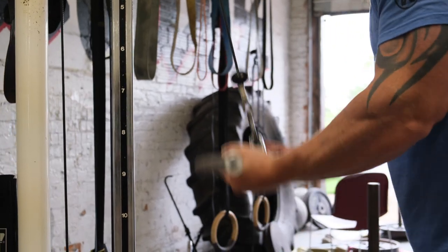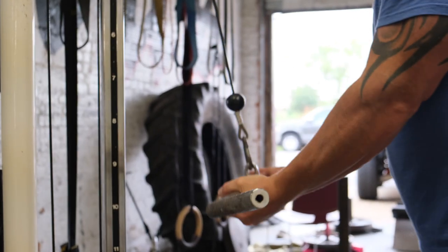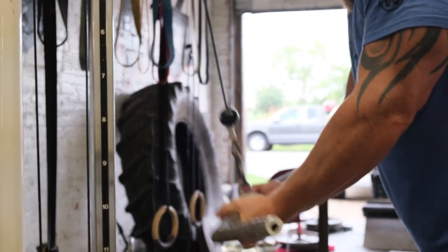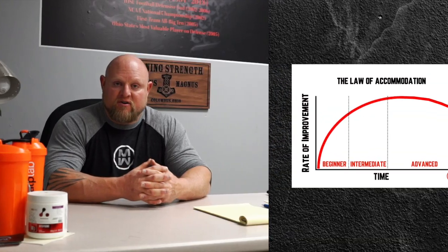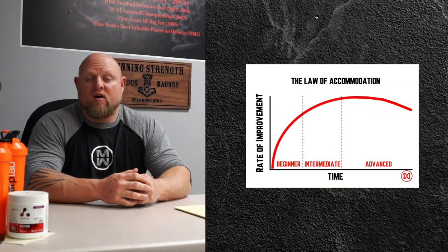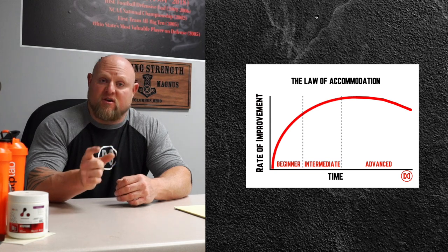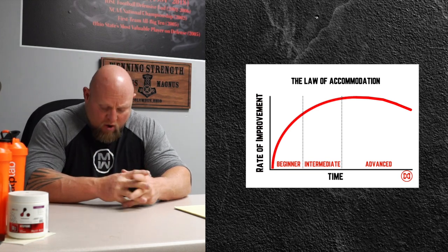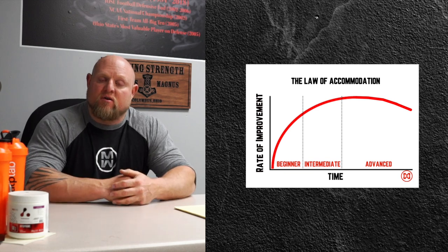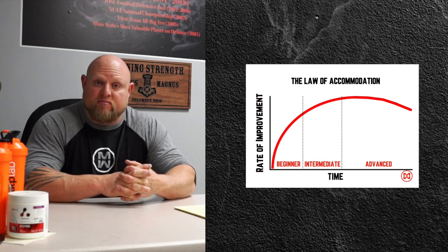At the end of the day, what we really want to see out of our training cycles is getting better. The problem is that once the body senses a stimulus it's already seen, it's no longer as effective. The first time you do an exercise the body's never done before tends to be the biggest time it's going to see the most result — which is why we change exercises on a daily basis in our conjugate system, and why all the manuals have a different feel of similar exercises. The reason for that is accommodation.